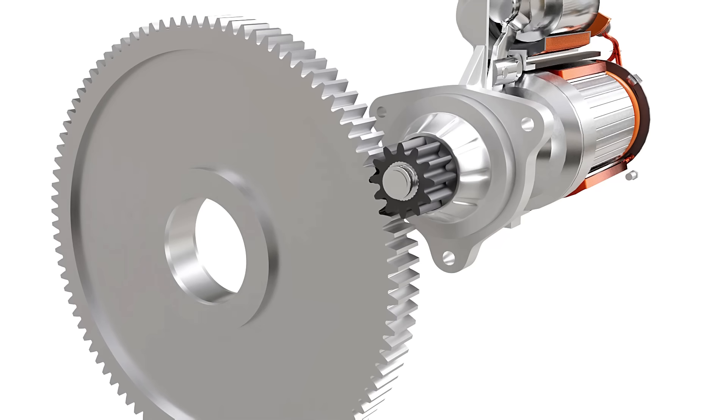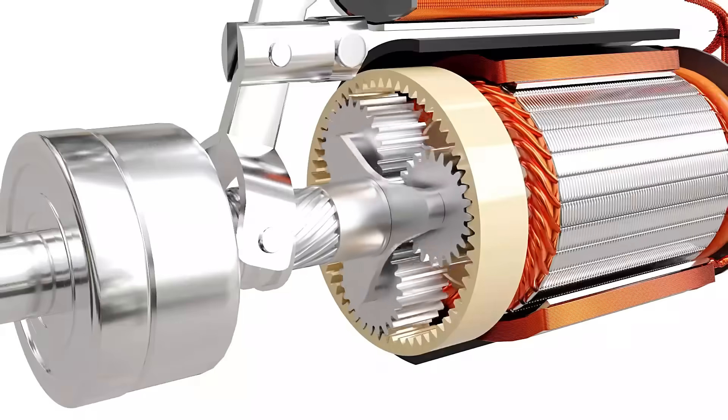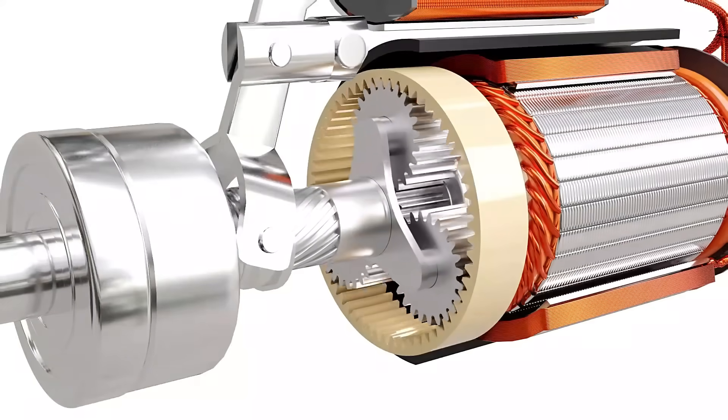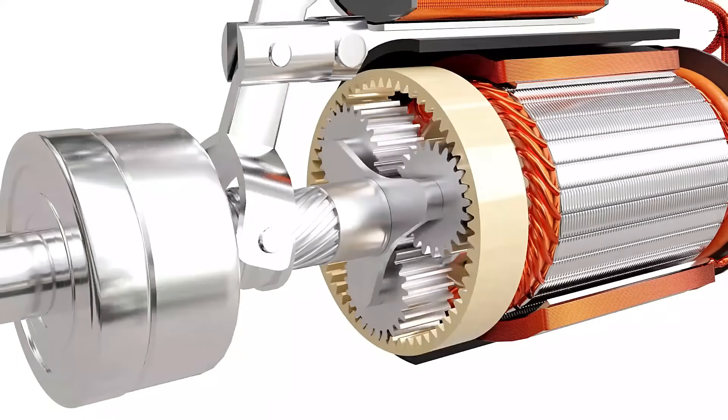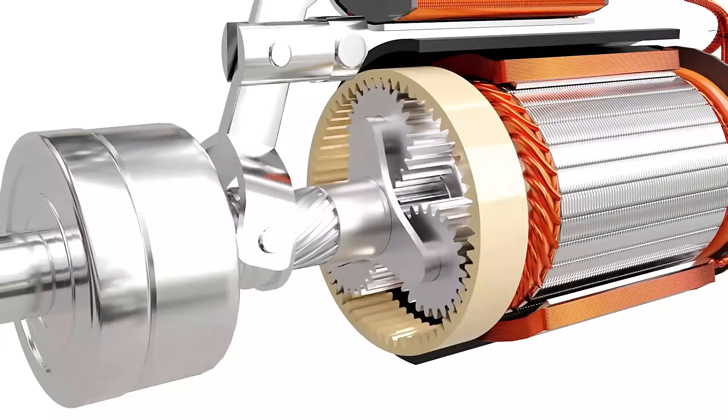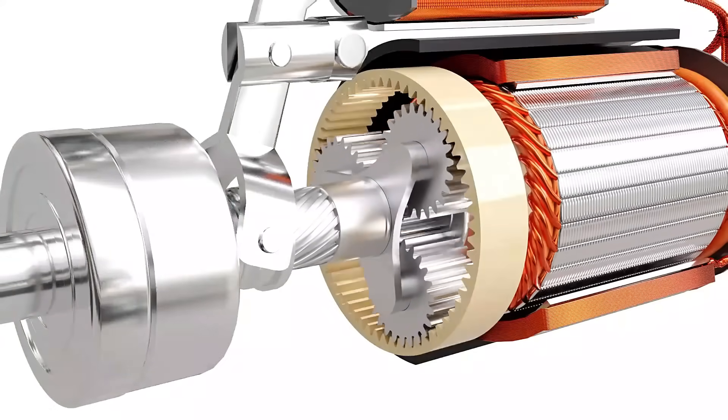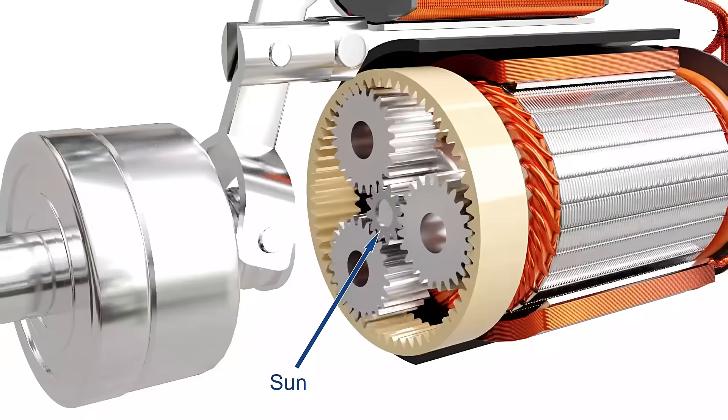So a planetary gear set is introduced to increase the torque further. Planetary gears are incredibly useful for large gear reductions with less weight and limited space. It consists of a sun gear, a ring gear, a carrier, and a set of planet gears.